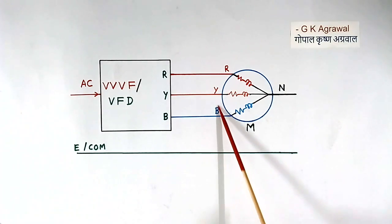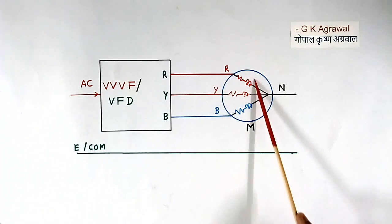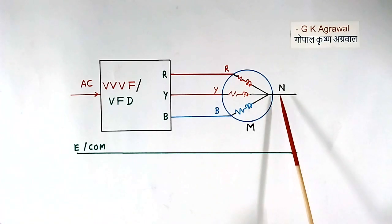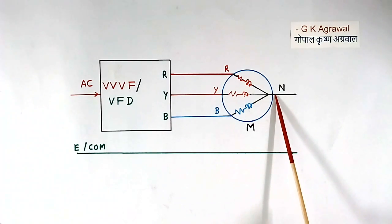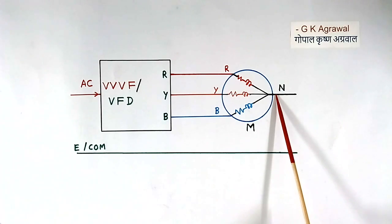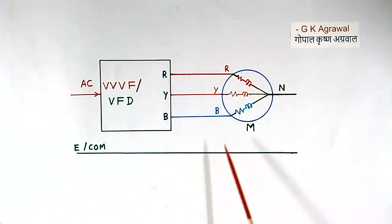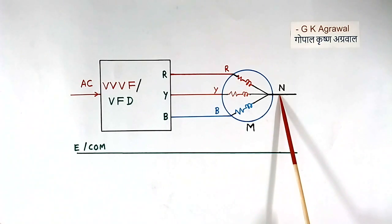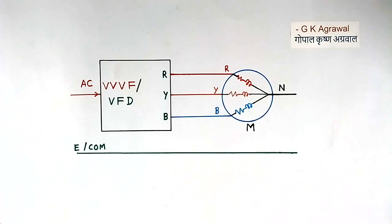So whenever there is some fault, the voltage of the neutral may change. And if we measure the voltage of the neutral, it may be possible to find out the probable location of the fault. It will not identify all faults, but it may indicate some faults.